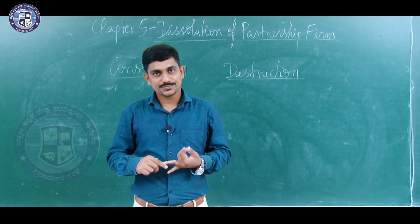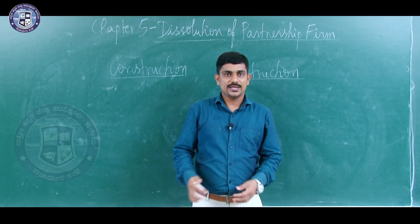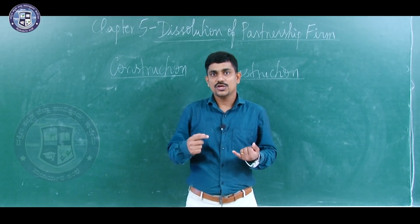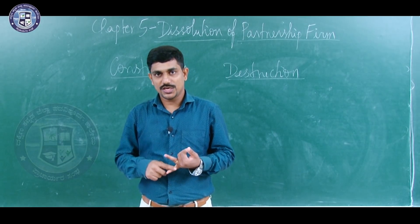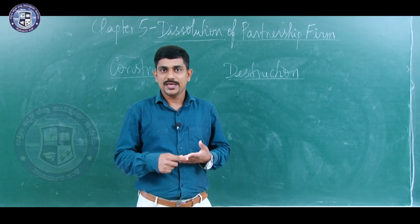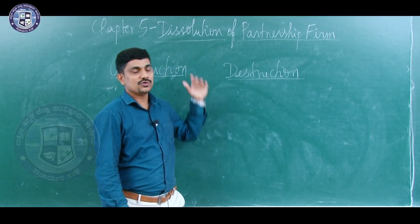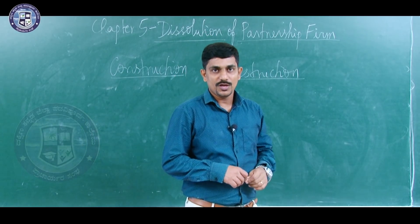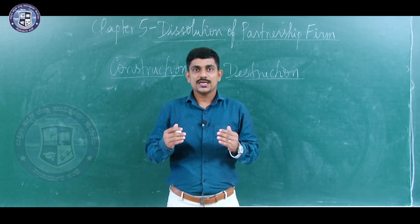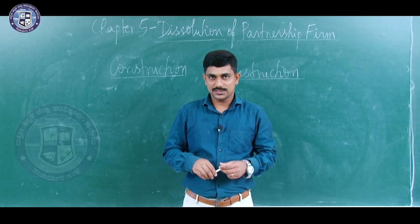The second reason is that in admission, retirement, and death of a partner, you have different calculations like new profit sharing ratio, gain ratio, sacrifice ratio, and treatment of goodwill. But such calculations are not included in dissolution of partnership firm. So, dissolution of partnership is the easiest as well as the last chapter in the partnership series.